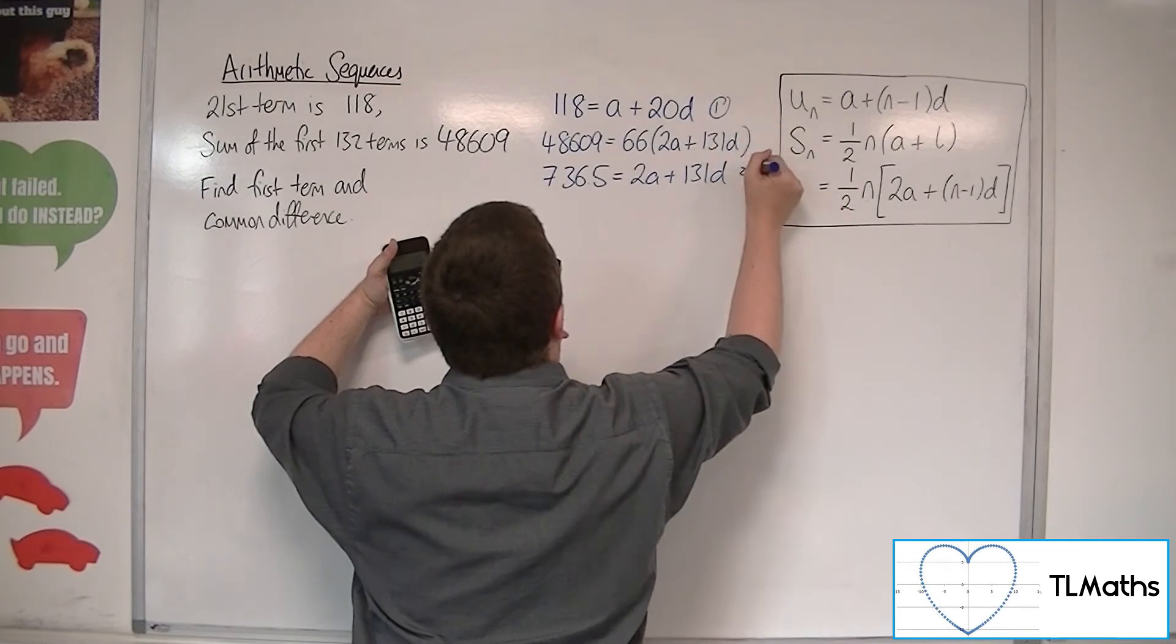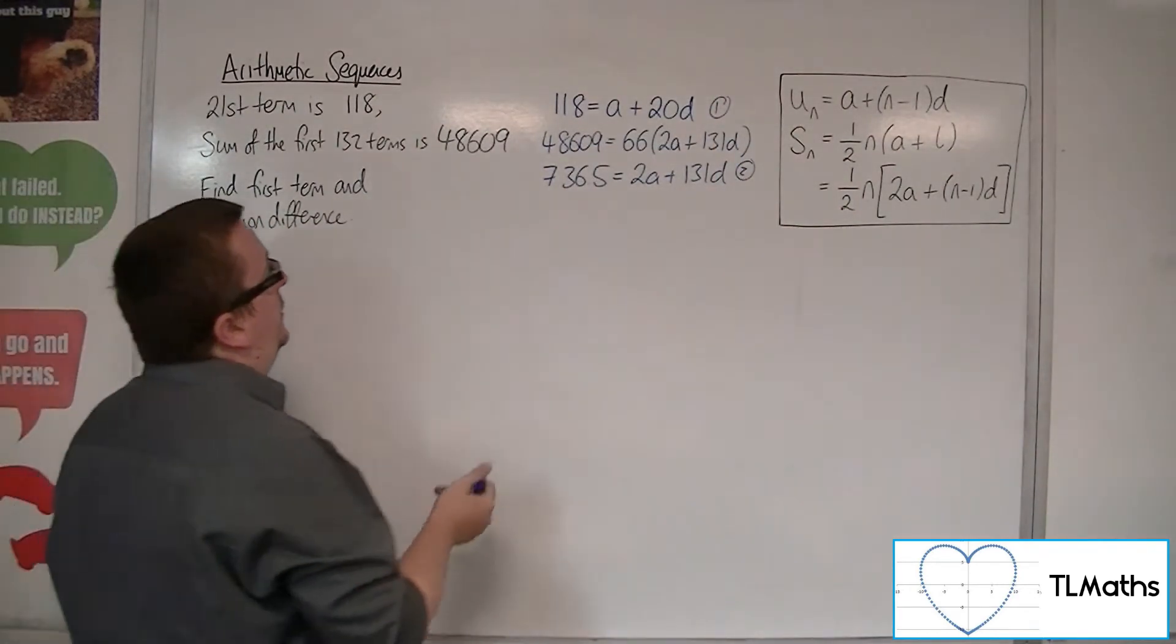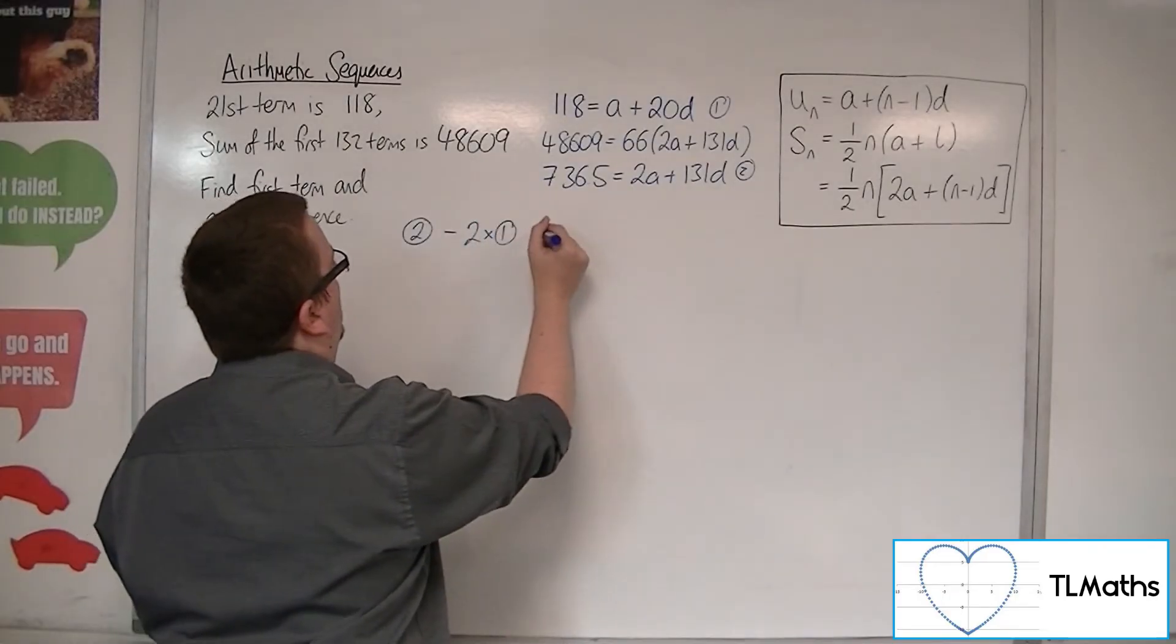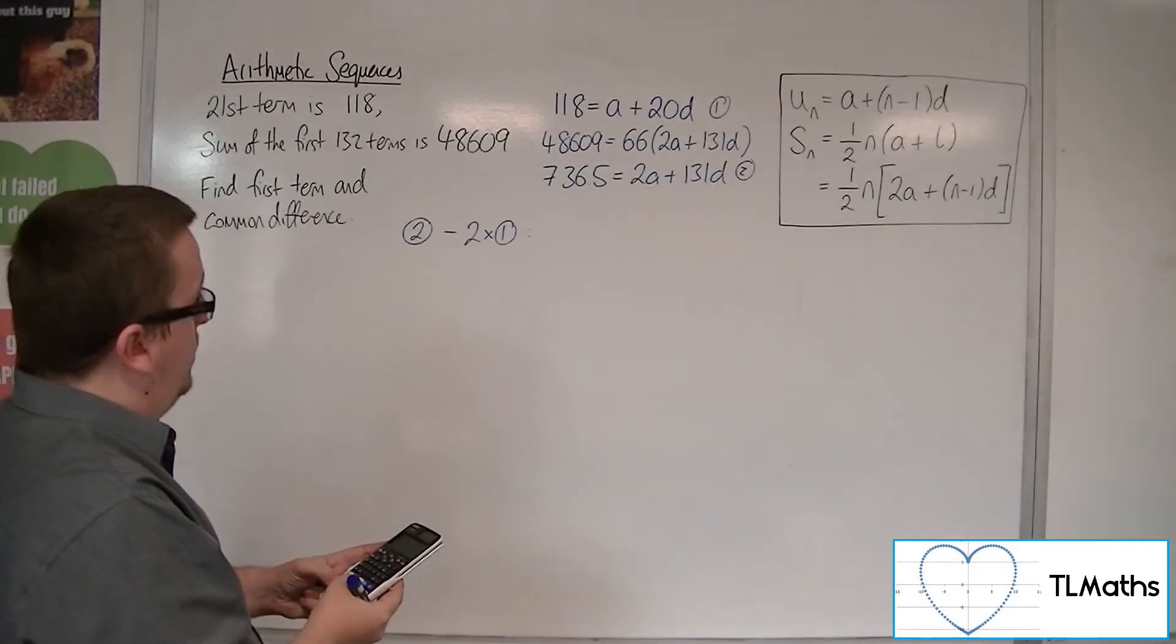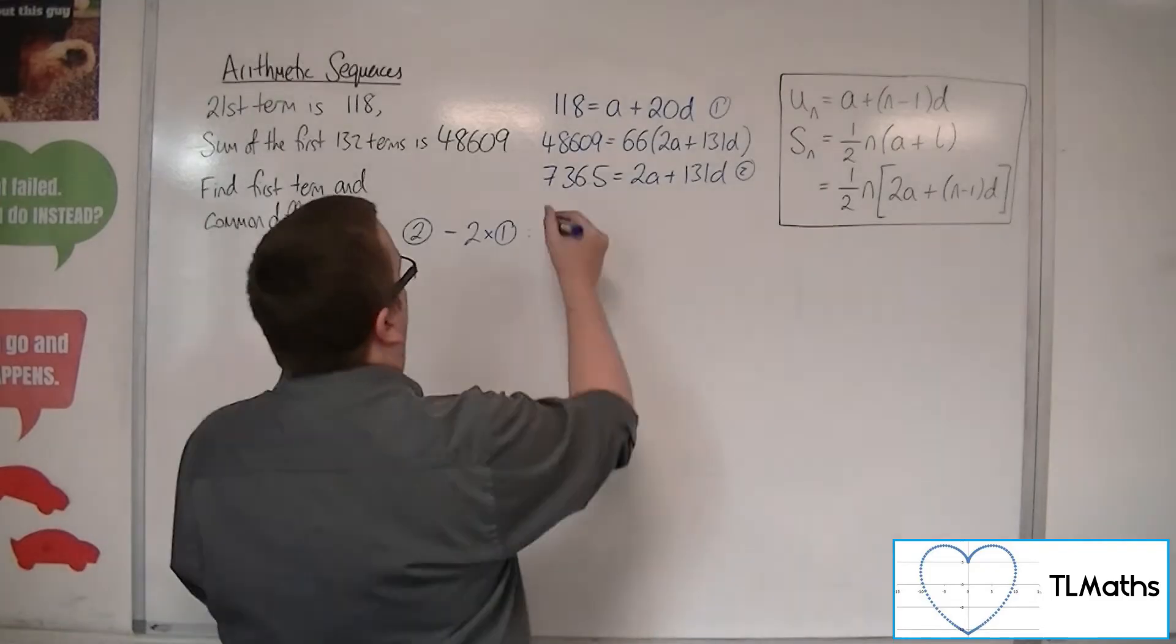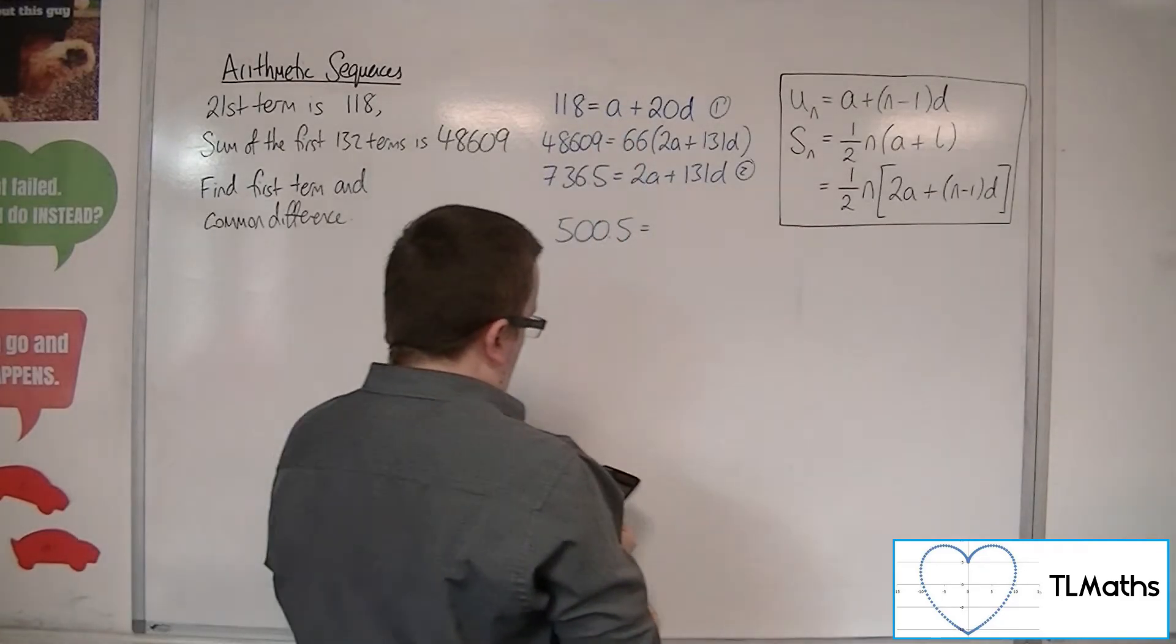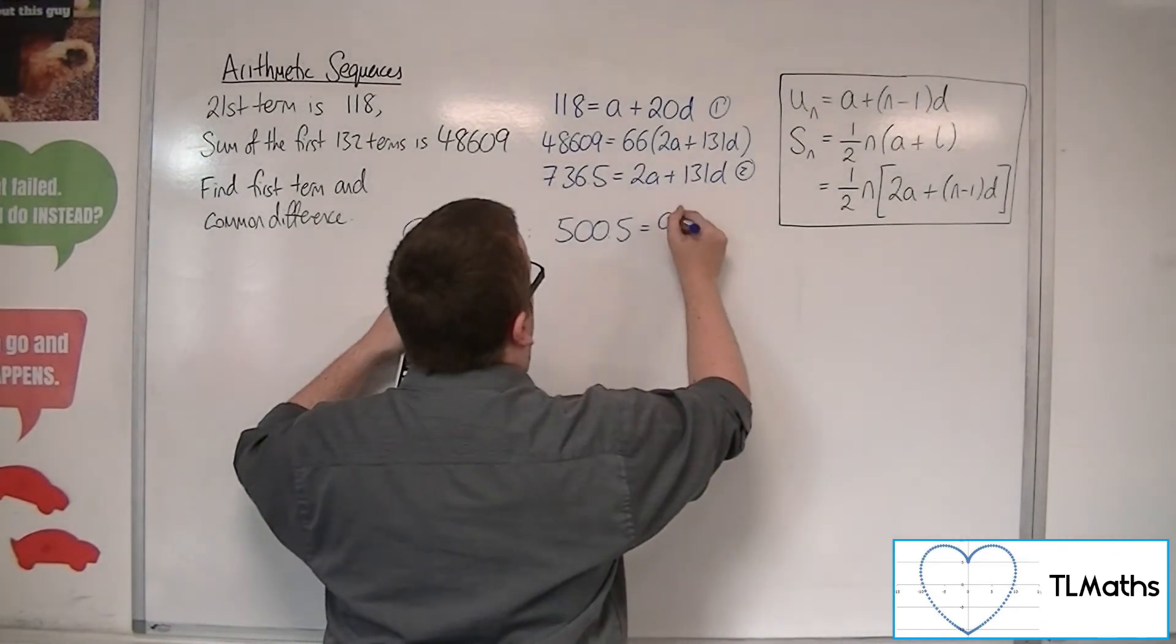That makes a little bit more sense doing it that way, so that I can cancel out the A's much more easily. So if I do equation 2 and then subtract 2 lots of equation 1, then we get 736.5 take away 2 lots of 118 is 500.5. The 2A gets cancelled with the 2A there, and then 131D take away 40D gets me 91D.